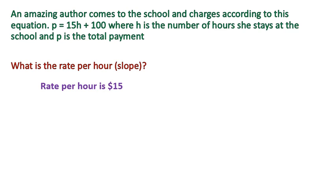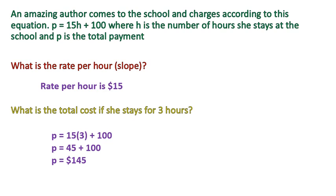One other way, you could start substituting values in for h and seeing how much they increase every time. You could do that as well. What's the total cost if she stays for three hours? Any type of question like this is going to require some substitution, similar to what we did in the previous question, only last time we used the number zero. But this time, we would substitute three in for our hours, multiply 15 times three, and then add that to 100. It would cost the school $145 to bring the author in. Pretty good deal for such an amazing author.